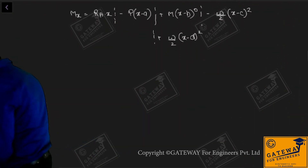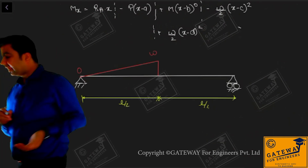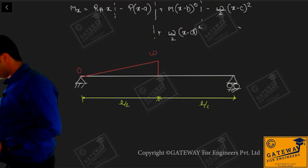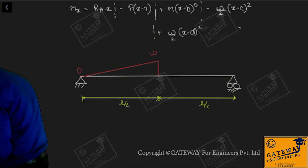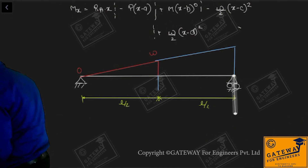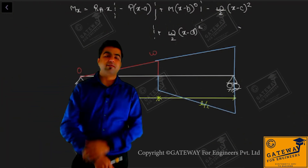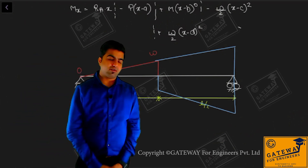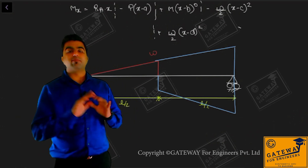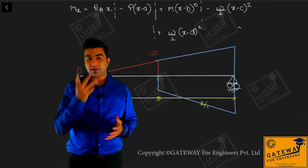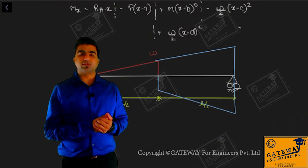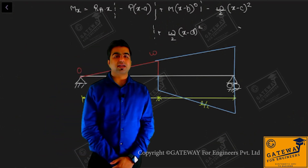So if you have a discontinuous triangular loading or uniformly varying loading, you make it continuous till the end and in the extended portion add an opposite direction same-nature load. These are the two special cases of Macaulay's method: one is concentrated moment, the other is discontinuous uniformly distributed load. This is very conceptual and logical. That's it for today's class, we'll meet in the next class. Thank you.